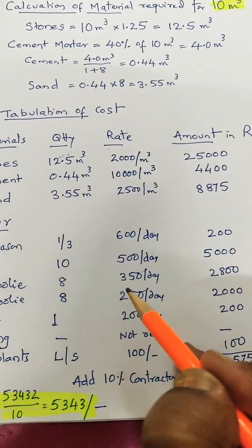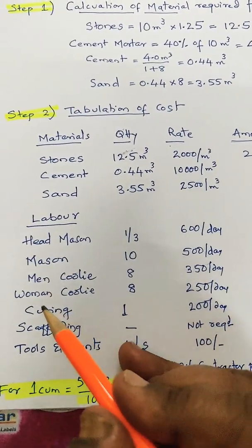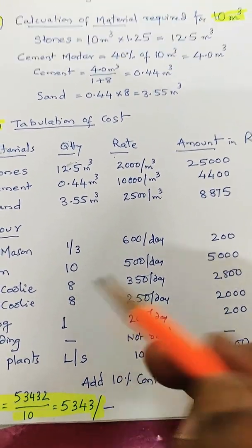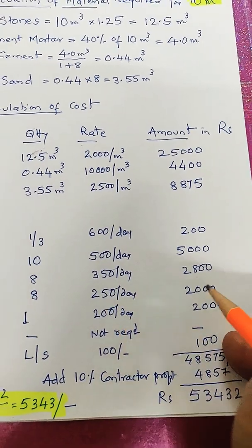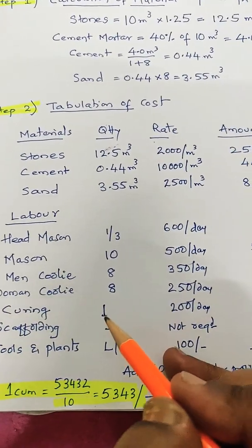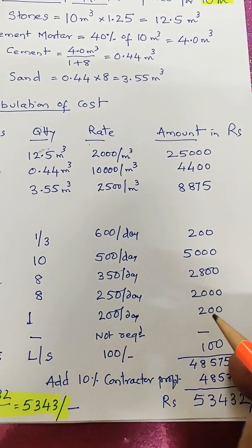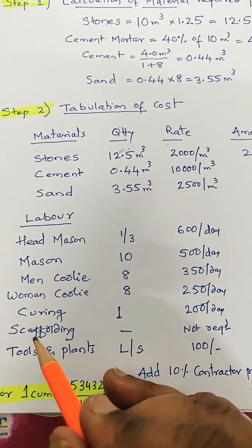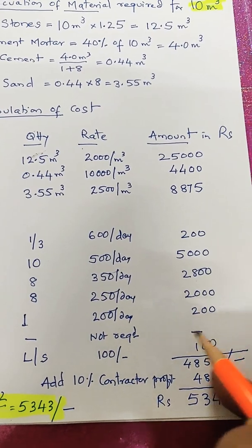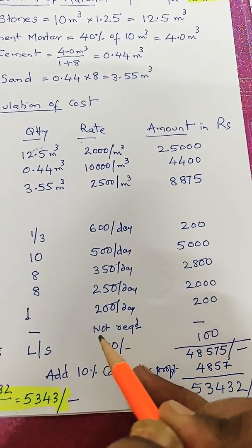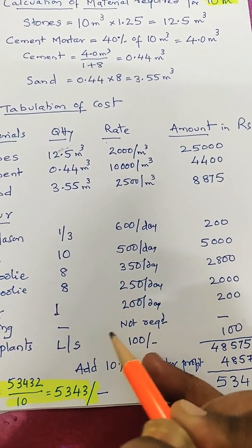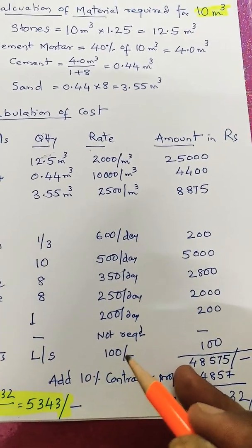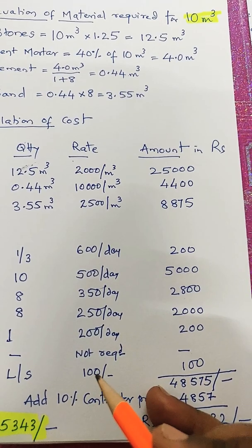Men coolie — 8 for foundation (10 for superstructure) at ₹350 per day, totaling ₹2,800. Woman coolie — 8 for foundation (10 for superstructure) at ₹250 per day. Curing — one person at ₹200 per day for the full one-month curing period, so ₹200. Scaffolding — not required for foundation; roughly ₹100 is taken for superstructure.